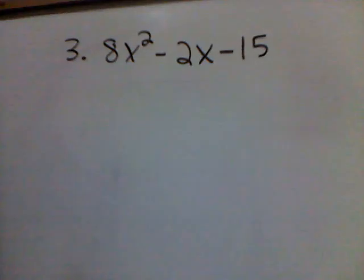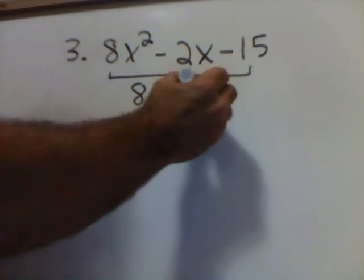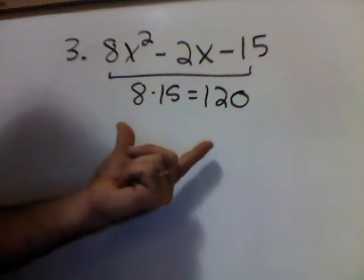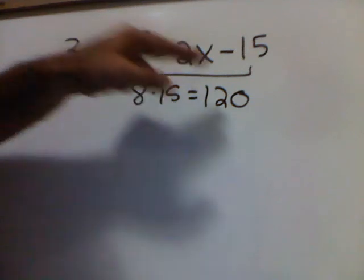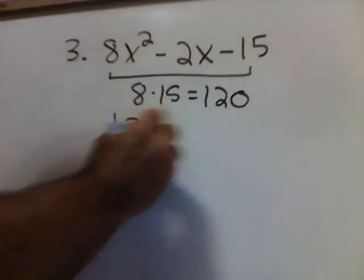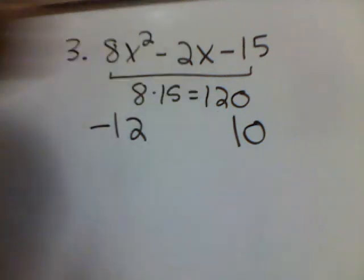All right, next problem: 8x squared minus 2x minus 15. All right, y'all. I got 8 times 15, which looks like 120. Last sign is negative. That means I'm going to have two factors with different signs. The larger factor will have a negative, like the middle number. Now, I need factors of 120 that subtract and give me 2. Well, y'all, that is 12 and 10. The larger number 12 is negative, like the middle number.